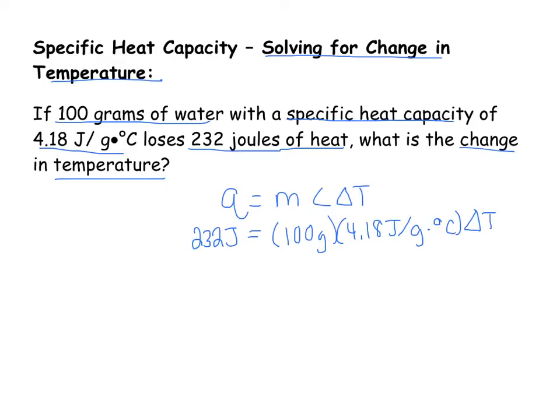So when I do this, the first thing I want to do is say, all right, 232 joules and take 100 times 4.18. If I do that, I get 418.